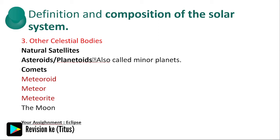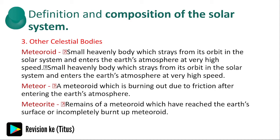To complete the solar system we also have other celestial bodies: natural satellites, minor planets, comets, meteors, meteorites, and the moon. A meteor is a small heavenly body which strays from its orbit in the solar system and enters the earth's atmosphere at very high speed. A meteorite is the remains of a meteor which have reached the earth's surface, or an incompletely burnt-up meteor.